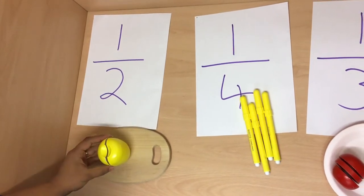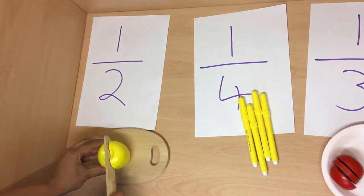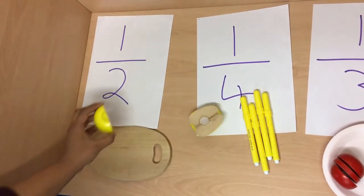As you can see, I have two parts to the apple. I am now splitting that into half, therefore I have one out of the two.